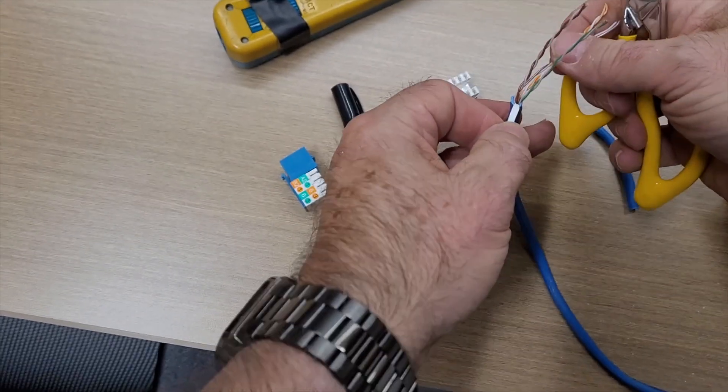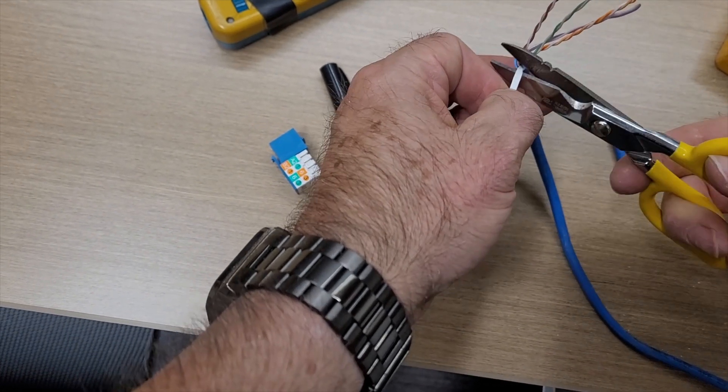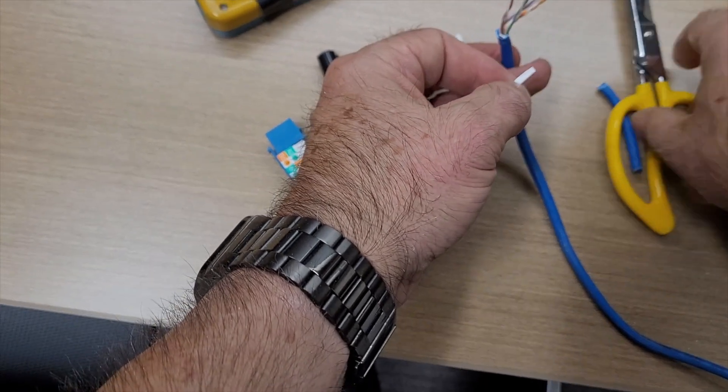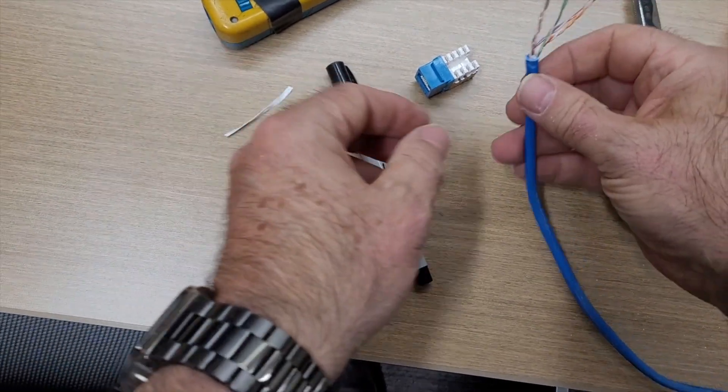And then if there's anything extra inside that's not the wire, so for instance, sometimes they've got these little tapes, or sometimes you'll see a four-way spline, sometimes you'll see a string. You want to get that out of there.